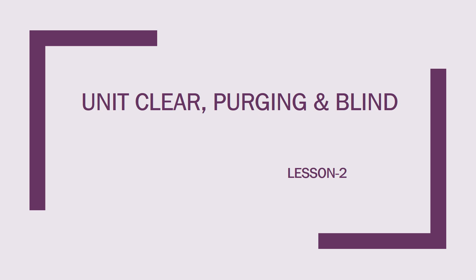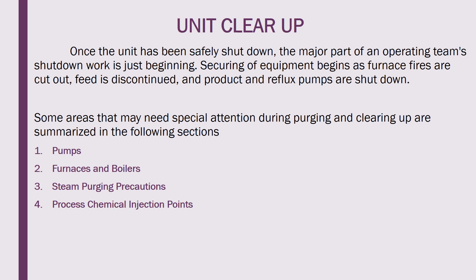The last portion of this unit is related to blind. This slide mainly discusses what areas require special attention during unit clear. The parts of equipment shown here include: pump as an auxiliary, boiler or furnace, steam purging precautions, and process chemical injection points. These are the four places where we have to give special attention.